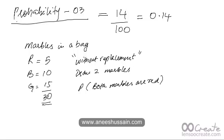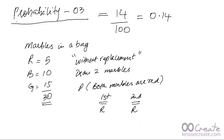To handle this question, ask yourself what are the different ways in which you can get two red marbles. The first marble and the second marble both have to be red. For you to win this bet you have to get them both right, so it's an AND condition. The probability that the first marble is red is 5 out of 30, since there are five red marbles out of 30 total. The probability that the second marble is red is 4 out of 29.